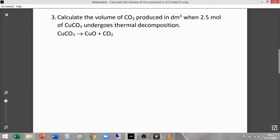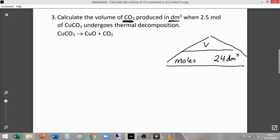Okay, question three. Calculate the volume of carbon dioxide, that's CO2, produced in decimetre cubed. Okay, so in a formula triangle, we want it in decimetre cubed, so that would be the number of moles multiplied, in this case, by 24. There's the formula triangle.